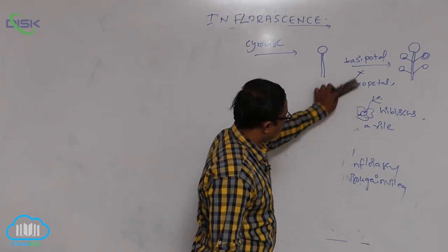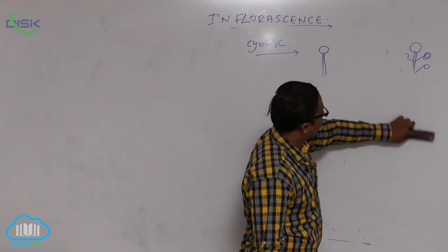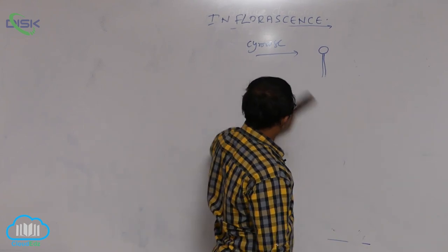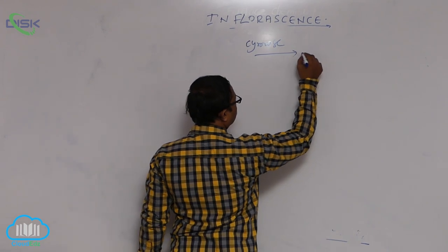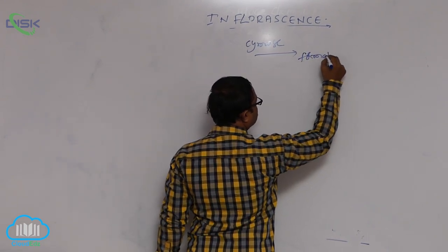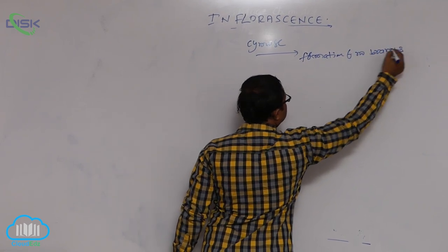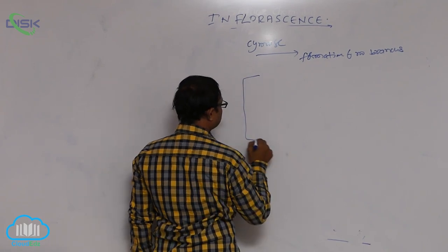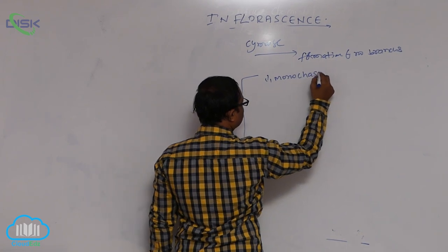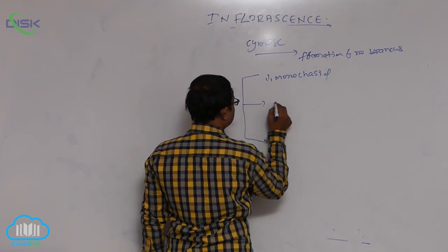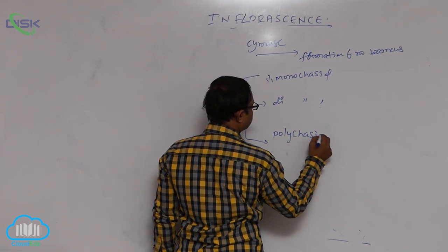Simos inflorescence is three types based on formation of number of branches. First is monocasial, second is dicasial, third is polycasial.